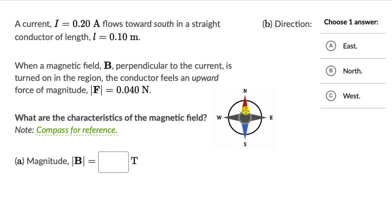Let's solve a couple of questions on forces on current-carrying conductors in magnetic fields. For the first one, we have a current of 0.2 amperes flowing towards south in a straight conductor of length 0.1 meters. When a magnetic field B perpendicular to the current is turned on, the conductor feels an upward force of magnitude 0.04 newtons. We need to figure out the magnitude and direction of the magnetic field, using this compass for reference. Pause the video and try this question on your own first.